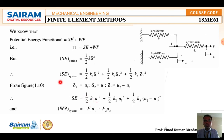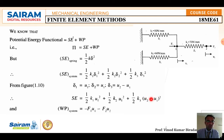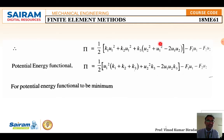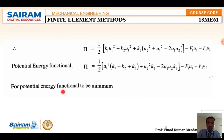Substituting both the strain energy and work potential into the potential energy equation, pi equals the combined expression. Expanding the term (u2 − u1)² gives a² + b² − 2ab. After simplification, the total potential energy function is: pi = half·u1²·(k1 + k2 + k3) + half·u2²·k3 − u1·u2·k3 − F1·u1 − F2·u2. Here u1 and u2 are the two unknowns.